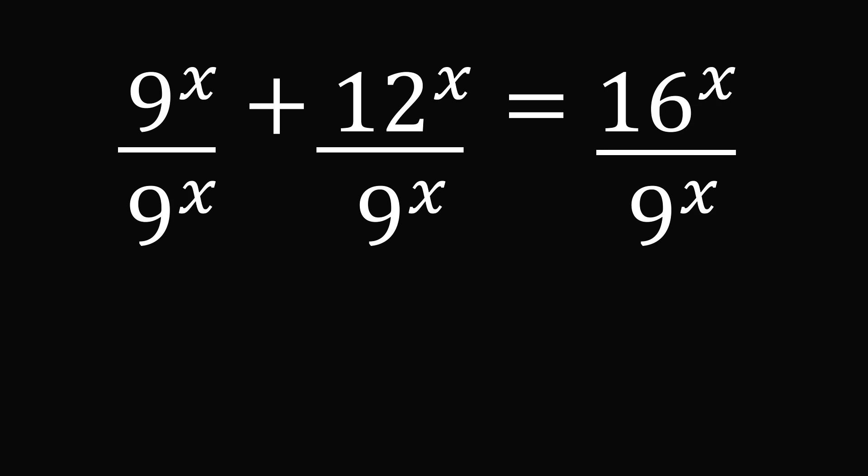Let's simplify term by term. What is 9^x divided by 9^x? This is equal to 1. So the very first term is just 1, and we've already simplified this equation.